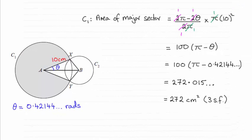Hi there. So for this question then, we had to find out the area of the major sector of C1, this shaded area here. And it turned out to be 272 centimeter squares then to three significant figures.